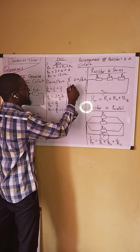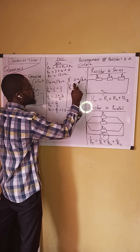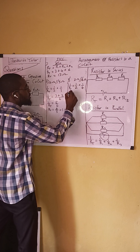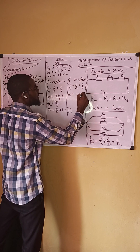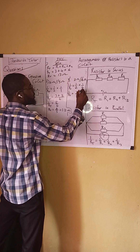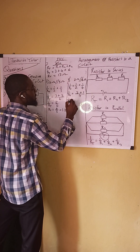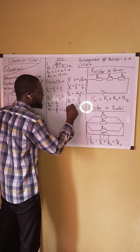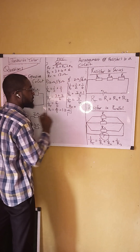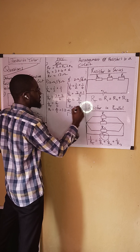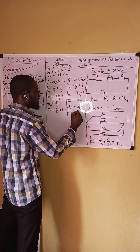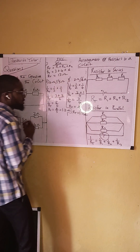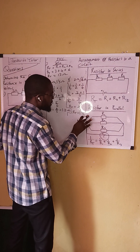For the second parallel group — 2 ohms in parallel with 4 ohms — one over total resistance equals one over 2 plus one over 4. The LCM is 4, giving us 2 plus 1 over 4, which is 3 over 4. Taking the inverse, total resistance equals 4 over 3, which is approximately 1.33 ohms.